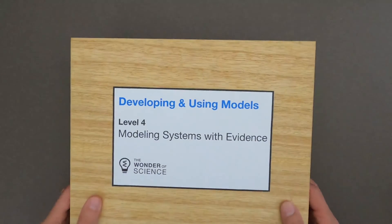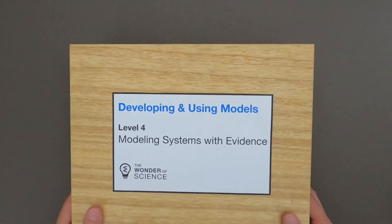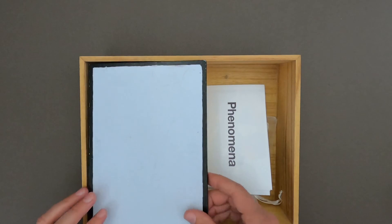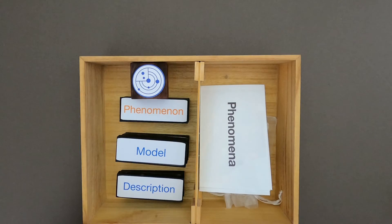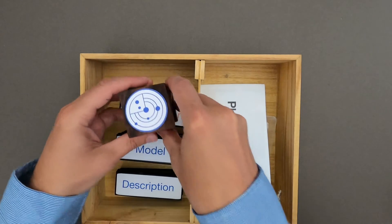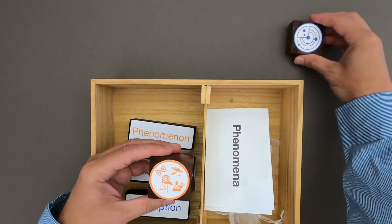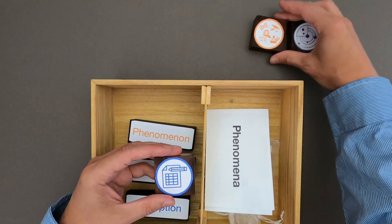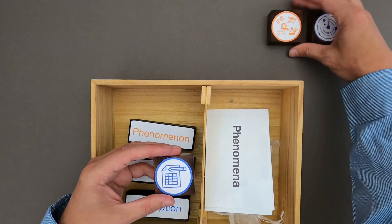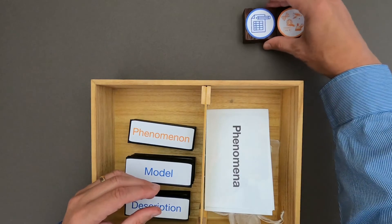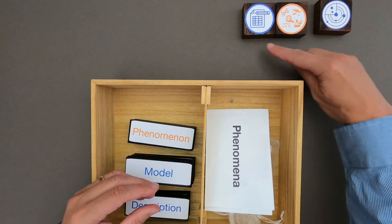Hi, it's Mr. Andersen and this is a mini lesson on developing and using models — modeling systems with evidence. You can see since there's a whiteboard in here that we're going to be doing a little bit of drawing. Up to this point in all of our mini lessons on models we've always started by not only creating a model but defining what is the phenomena that we're trying to model. What will make this video different is we're going to have evidence that goes along with that phenomena.